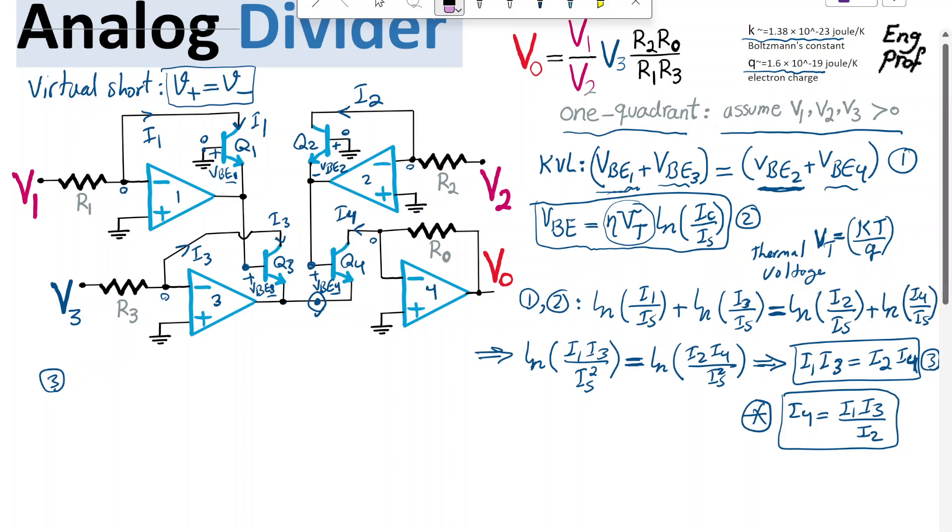so we have I1, I3 equal to I2, I4. I just rewrote the equation 3 here. Now,